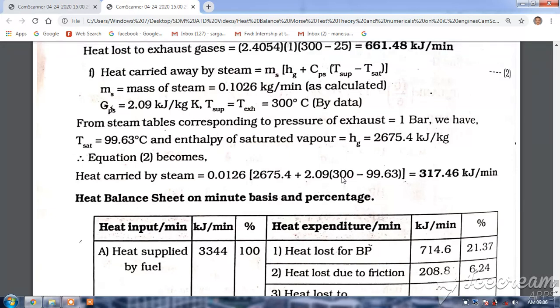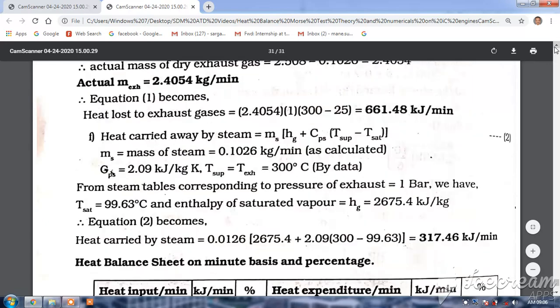T_saturation is 100°C, so this way you calculate the heat carried away by the steam using c_p of exhaust. The temperature of steam equals the temperature of exhaust at 300°C minus T_saturation at 100°C. Okay, thank you.